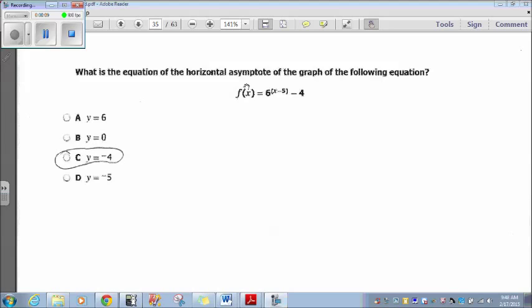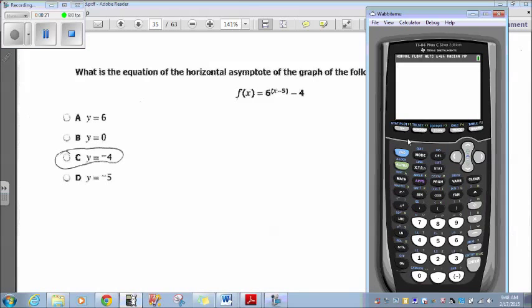What is the equation of the horizontal asymptote of the graph of the following equation? f(x) equals 6 to the x minus 5 power minus 4. Easiest way to do that, why don't we just plug it in?